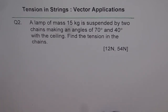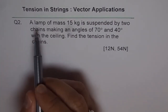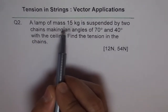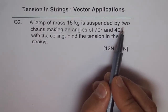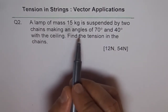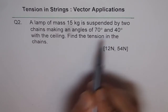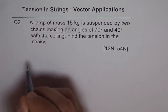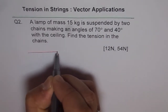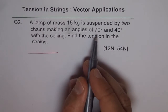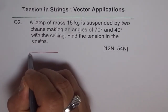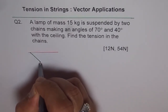The first thing we should do is draw the position diagram. We have a lamp — the mass of the lamp is given to us — suspended by two chains making angles of 70 and 40 degrees with the ceiling. So let us assume this is the ceiling, and with this ceiling we have a string making an angle of 70 degrees.